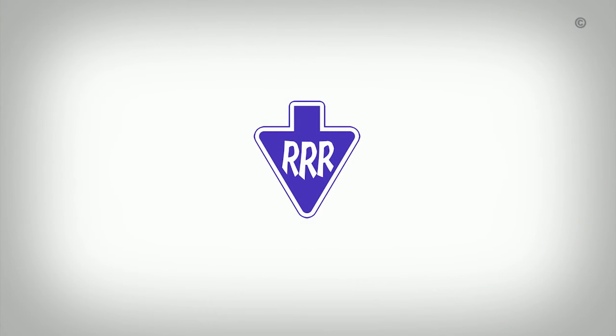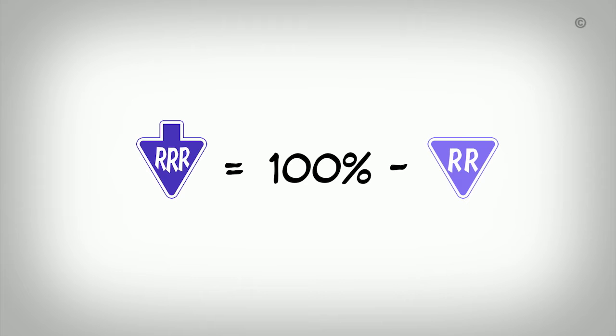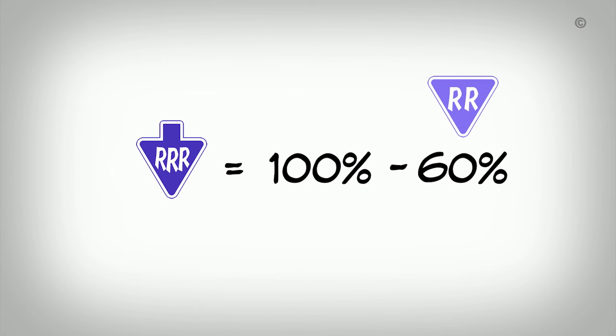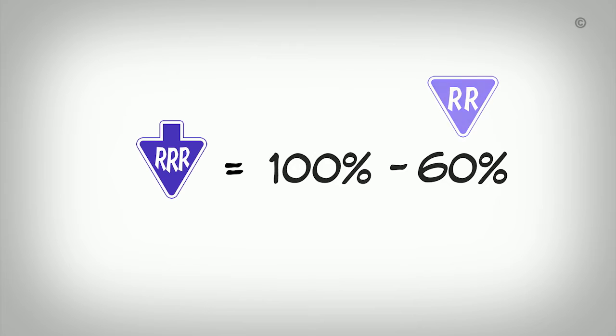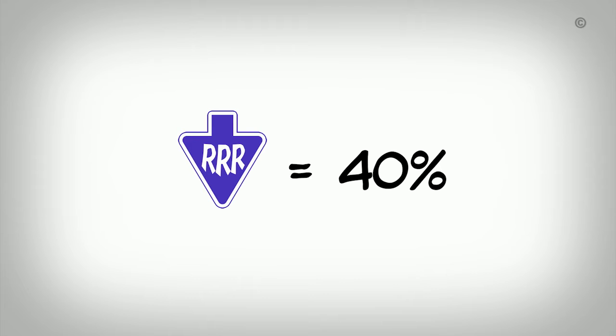Now that we know how much risk for a fracture remains after exposure to the intervention, we can calculate how much the risk for a fracture is reduced among those in the intervention group. This is referred to as the Relative Risk Reduction, or RRR for short. The RRR is calculated by subtracting the relative risk percentage from 100%. From our example, we subtract the remaining risk of 60% from 100, which gives us 40%, meaning the intervention reduces the relative risk for a fracture by 40% among those exposed to the intervention.